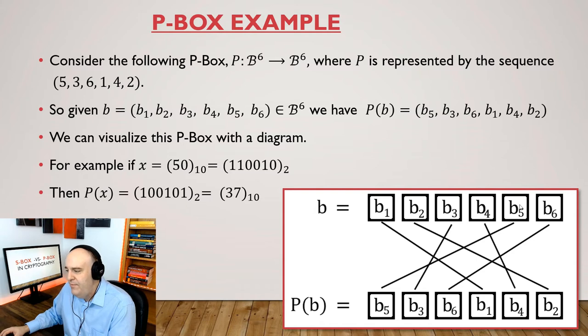So no matter what values these bits are, it always gets permuted in the same way. And using this function notation here, maybe that makes it clear, B1 up to B6. If that's your input value, then the output value is B5, B3, B6, B1, B4, B2. And that's the exact meaning of this. That's the exact way that this function is represented by this list.